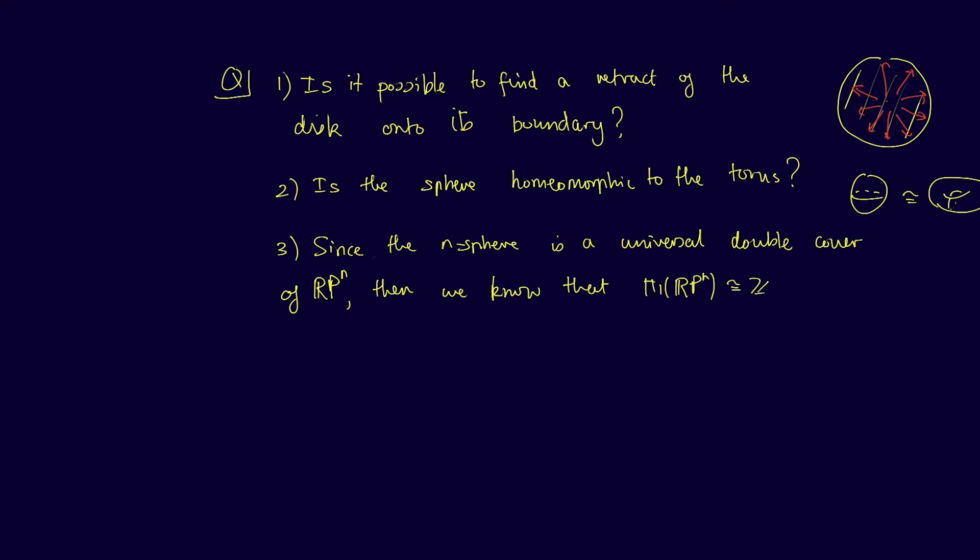In other words, π₁ of RP^n is isomorphic to π₁ of RP^m for all n strictly bigger than m strictly bigger than one. Then we can ask if there exists a map f from RP^n to RP^m that induces this isomorphism on homotopy groups.